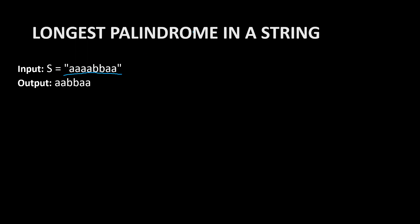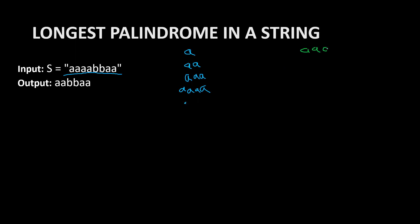Let us see how many palindrome strings can be found inside this. The first one is A itself — read left to right it's A, read right to left it's A. Double A is also a palindrome. Triple A is also a palindrome. And four A's are also a palindrome, because from left to right and right to left you read the same. Now A, A, A, B — this is not a palindrome. Similarly, those and other combinations following B are not palindromes.